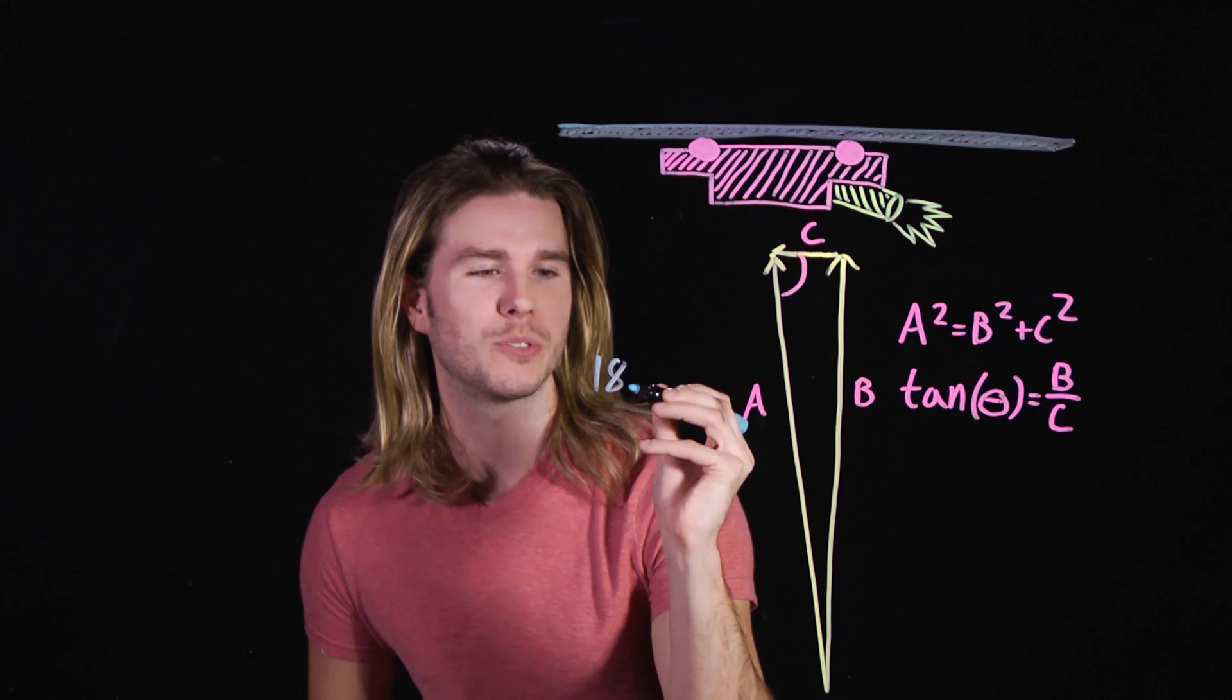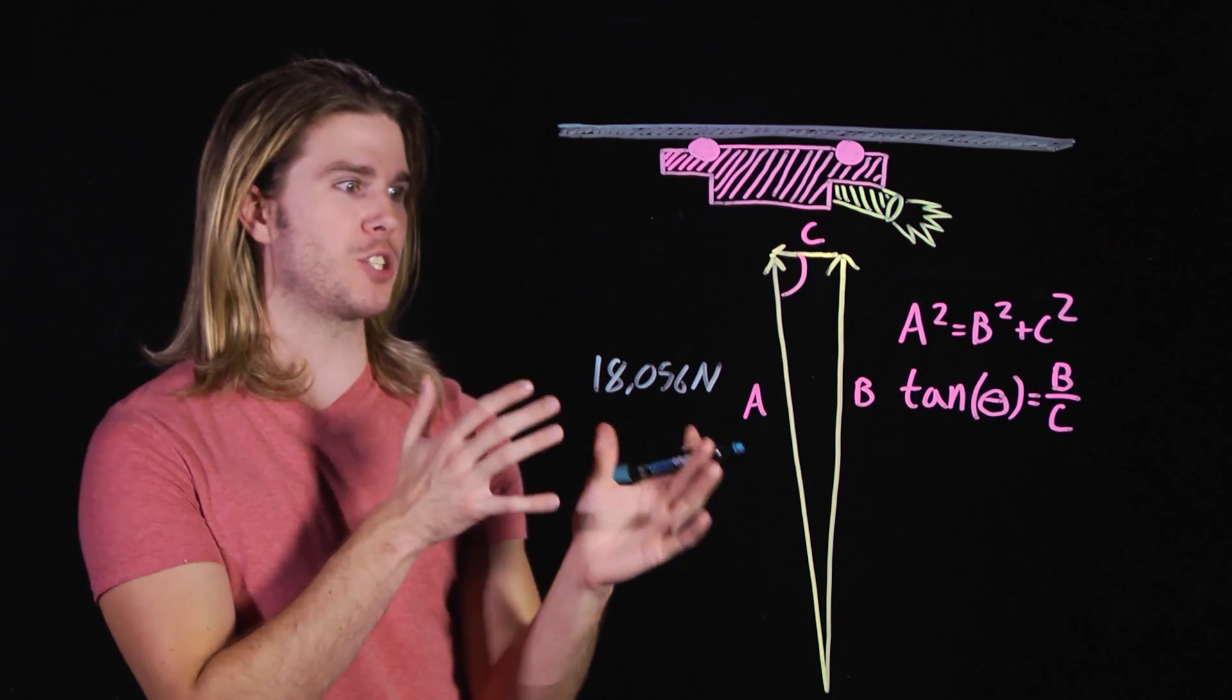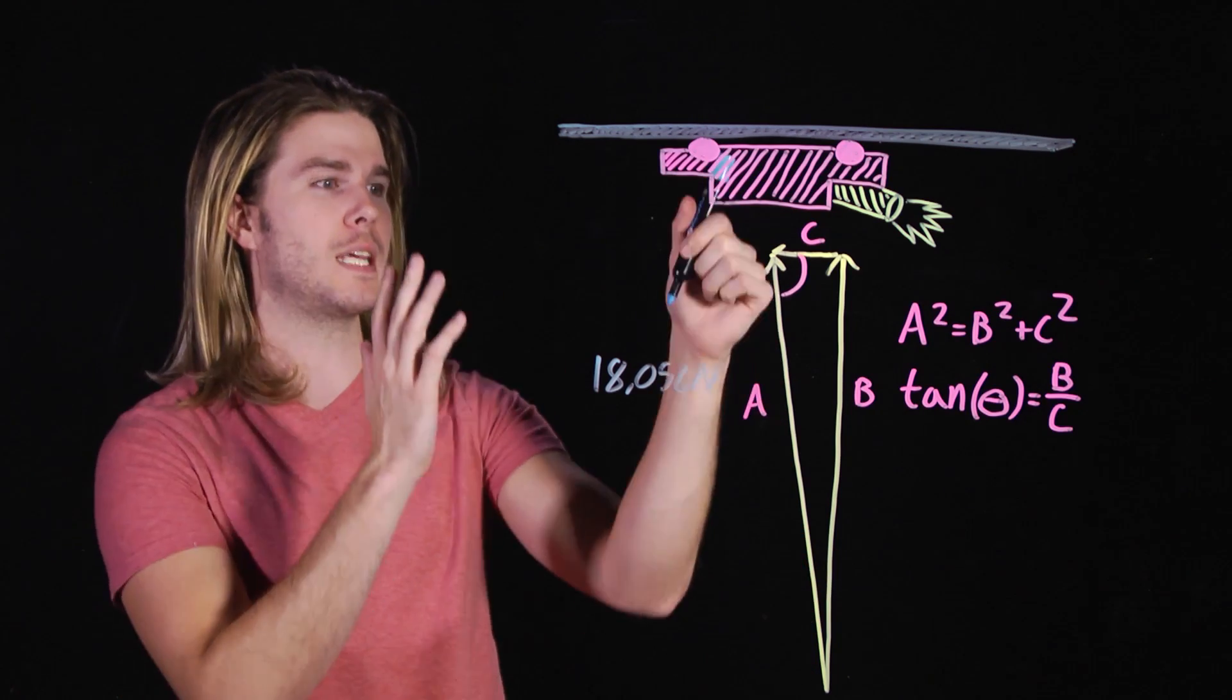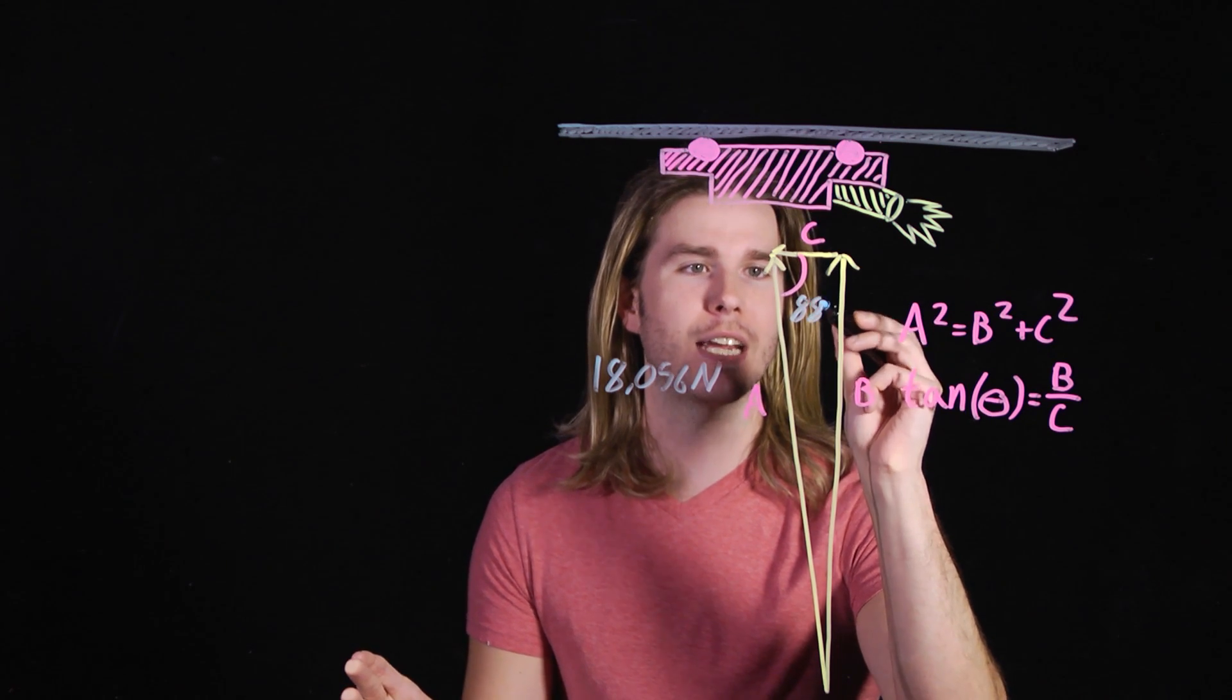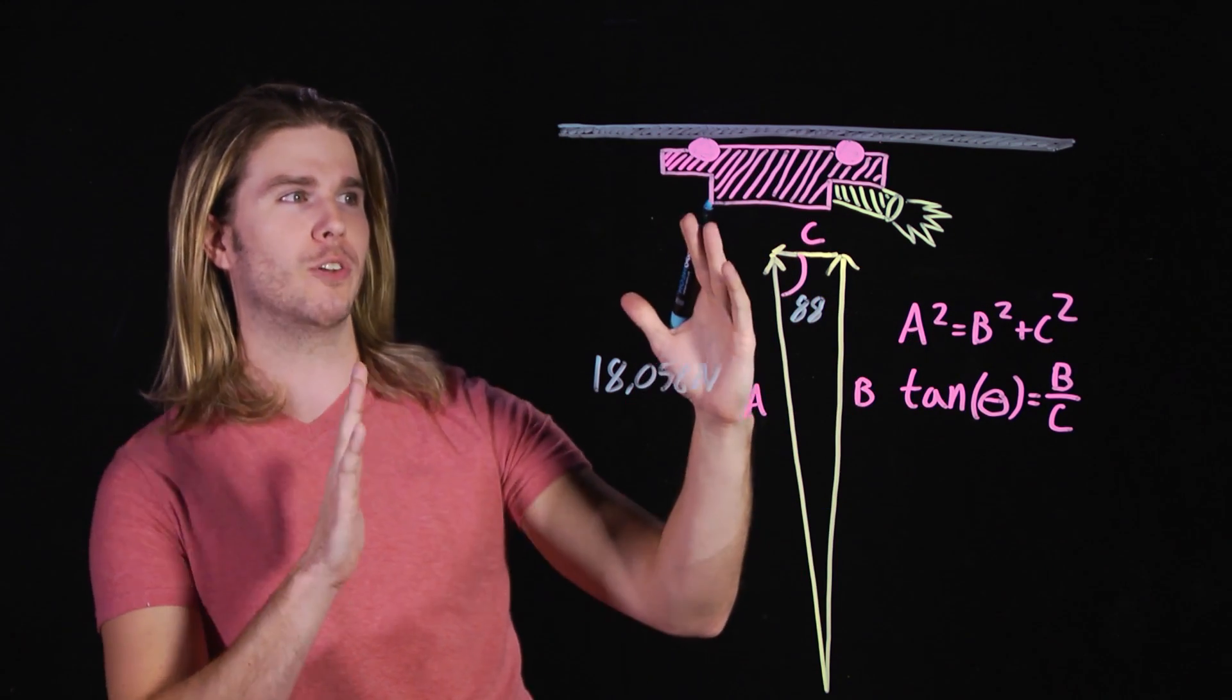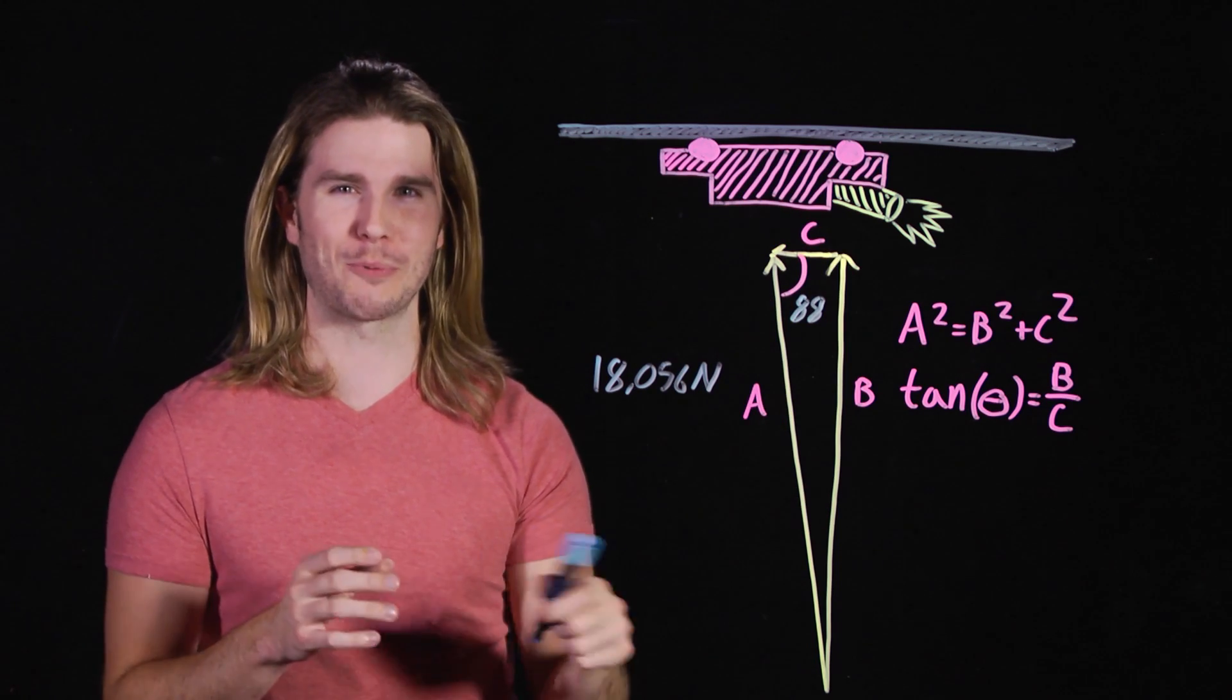A is equal to 18,056 Newtons, so not that much different than the vertical thrust. It looks like almost everything is going to keeping the car up, and the rocket angle is 88 degrees, which is totally different than it is in the movie. The angle in the movie is very low, but science makes more sense this way.